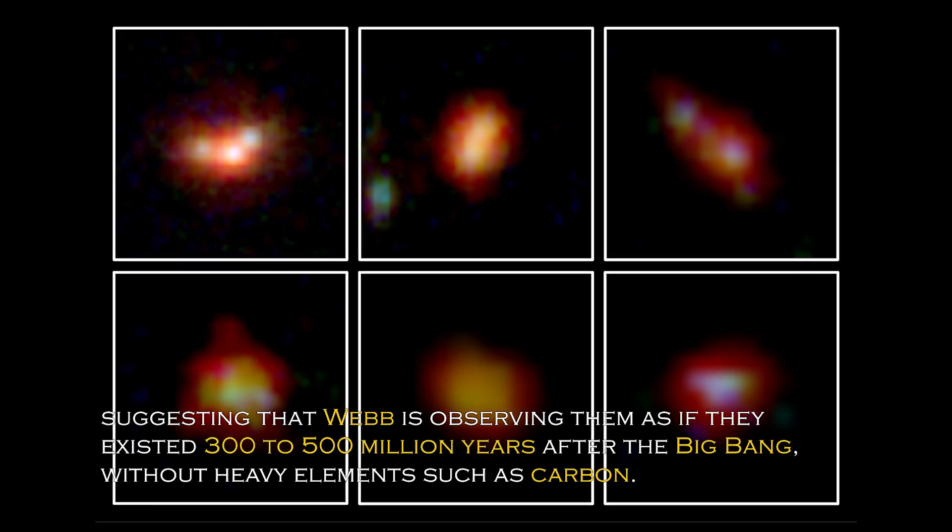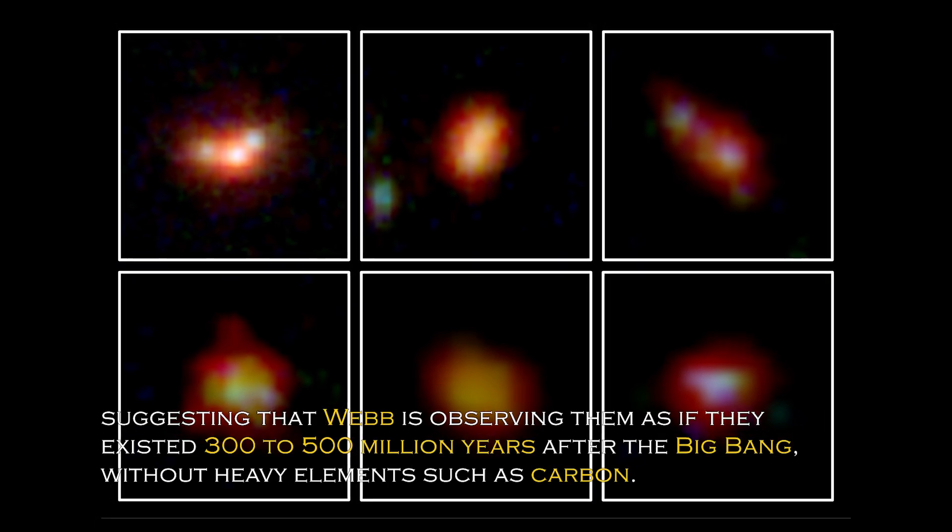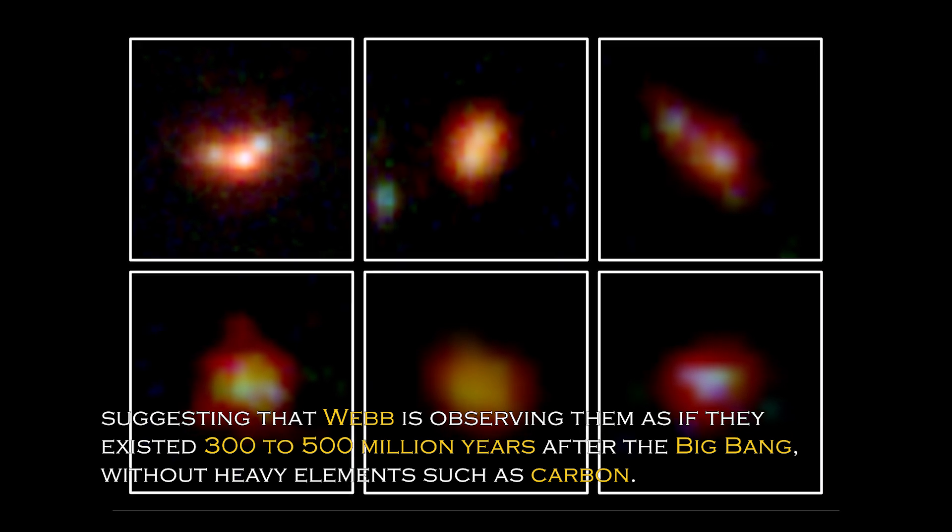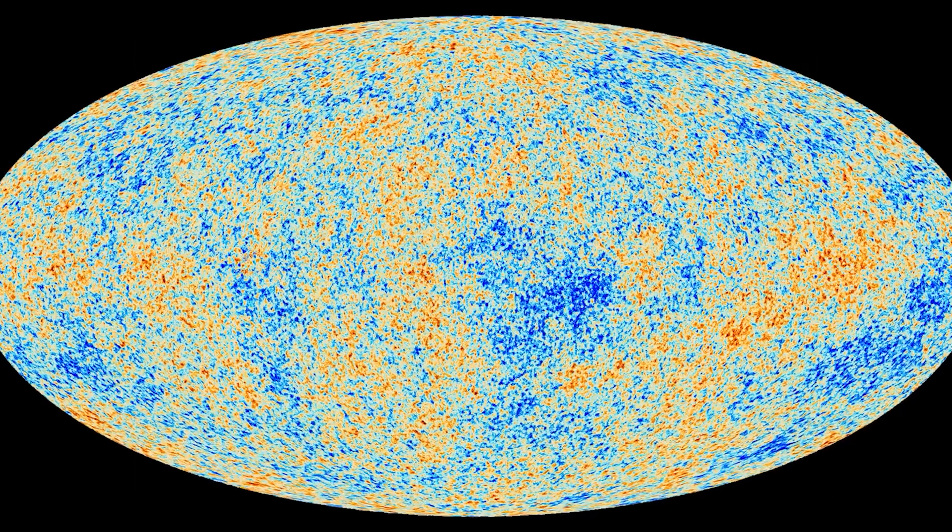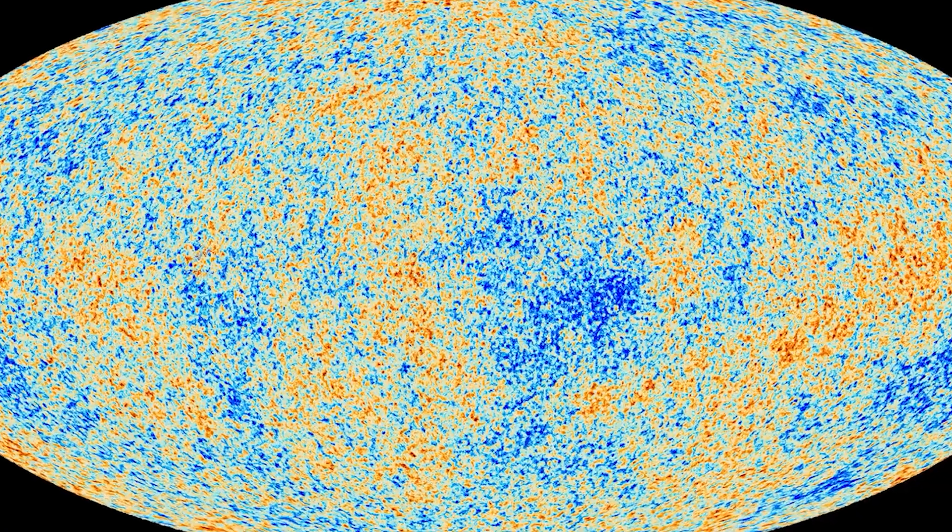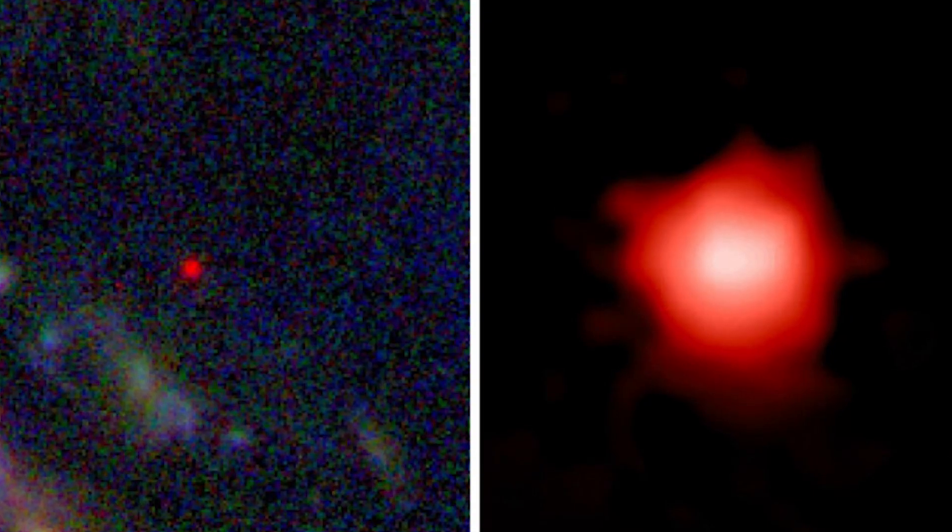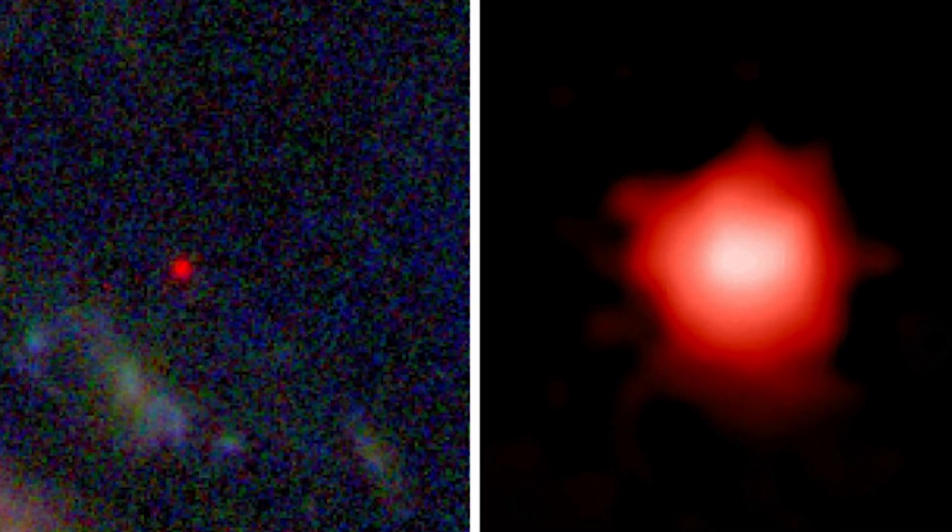This suggests that Webb is observing them as they existed 300 to 500 million years after the Big Bang, without heavy elements such as carbon. This is surprising since the universe is estimated to be 13.8 billion years old, and the existence of these galaxies suggests that we need to revise our understanding of the early universe.